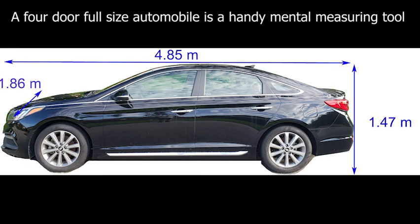A four-door full-size automobile is a handy mental measuring tool. The length is 4.85 meters. The height is 1.47 meters. The tank holds 70 liters and the weight is 1475 kilograms empty.